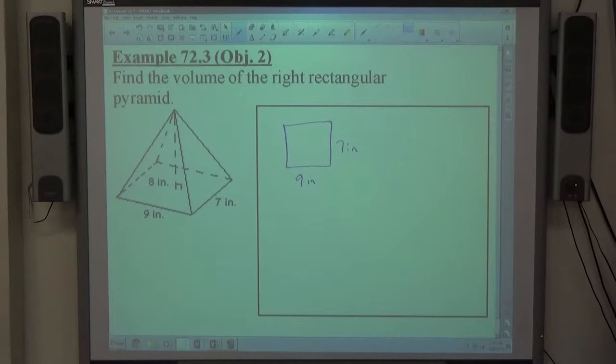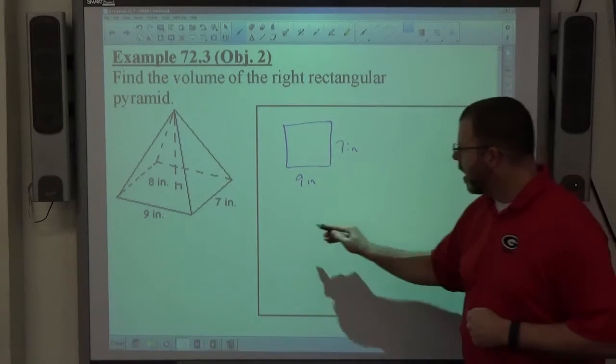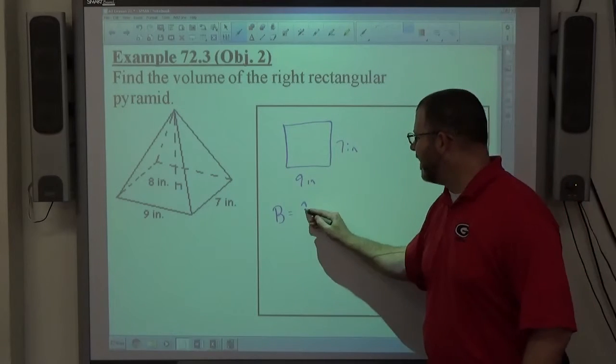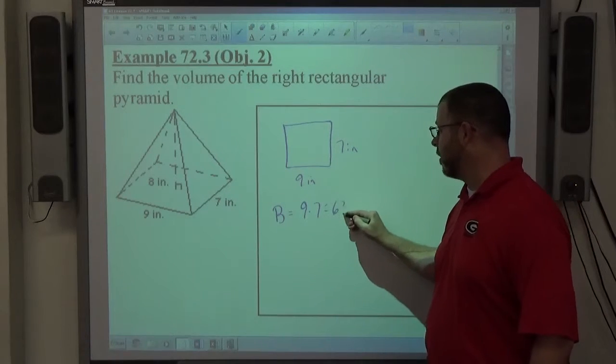I see it's a pyramid, so my process is find the area of the base, find the height of the pyramid, and then do BH over 3. That's the formula. I'm going to figure out B equals. I'm looking at a rectangle. The dimensions are 9 and 7, so 9 times 7 is 63 square inches.